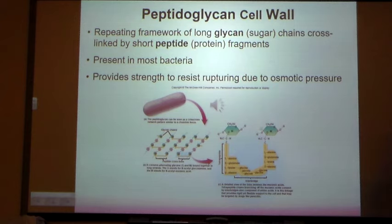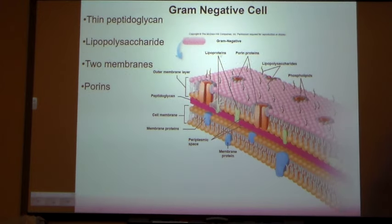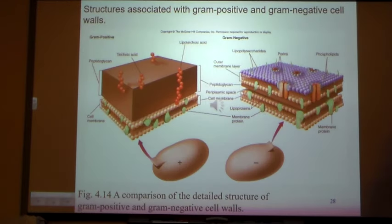So those are the two types of sugar, and it also has a protein bridge — a peptide bridge. Now we will talk about the fundamental difference between two types of cell wall: gram-positive versus gram-negative. I have a slide comparing these two.